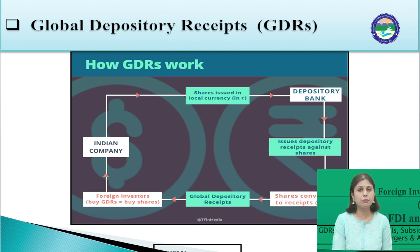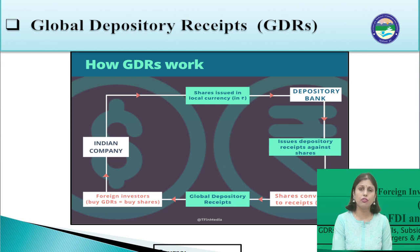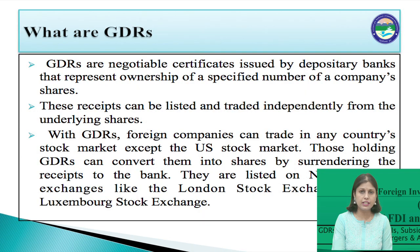These receipts trade like domestic shares in that country even though they belong to an Indian company, and investors can purchase them in an international marketplace. The depository bank is essentially a financial intermediary that acts as the custodian of the shares issued by the Indian company. In formal terms, GDRs are negotiable certificates issued by depository banks that represent ownership of a specified number of a company's shares. These receipts can be listed and traded independently from the underlying shares.